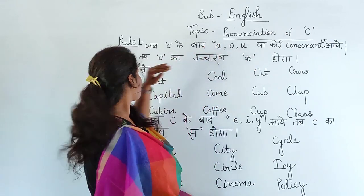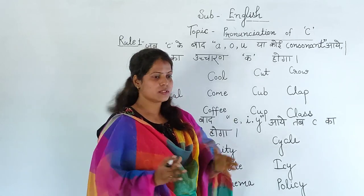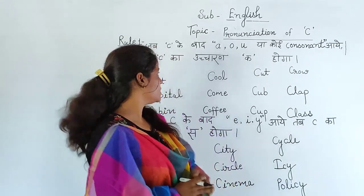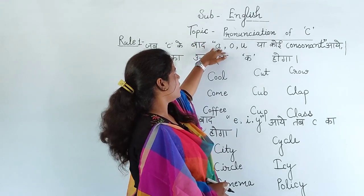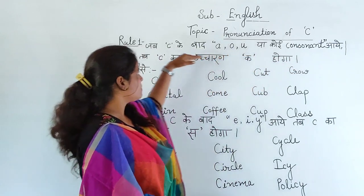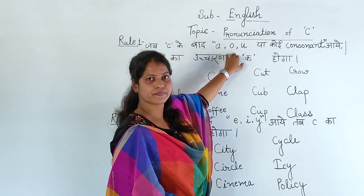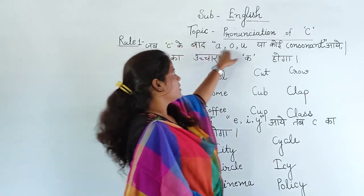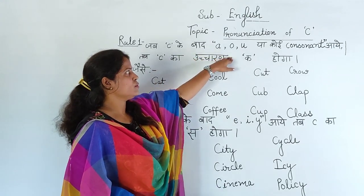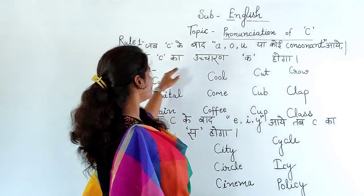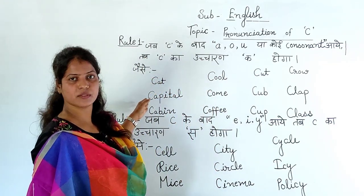Let us understand again. When C comes after A, O, U or a consonant — A, O, U are your vowels — or any consonant, meaning any letter other than vowels, then we will do the 'K' pronunciation of C. I have written some examples here. Look here.